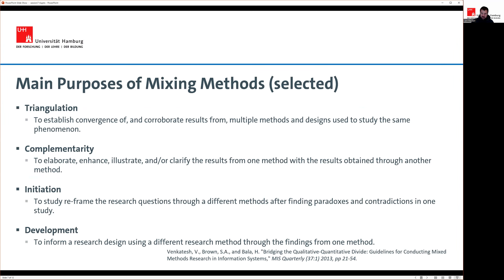We also typically have different purposes or aims for doing mixed methods. A referenced paper lists eight or nine of them, but there are four main purposes. The first is triangulation — you use different methods to obtain converging and corroborating results. You study one phenomenon from multiple angles and hope that, through triangulation, the same picture emerges irrespective of the method used to investigate the phenomenon, thereby strengthening the inference.